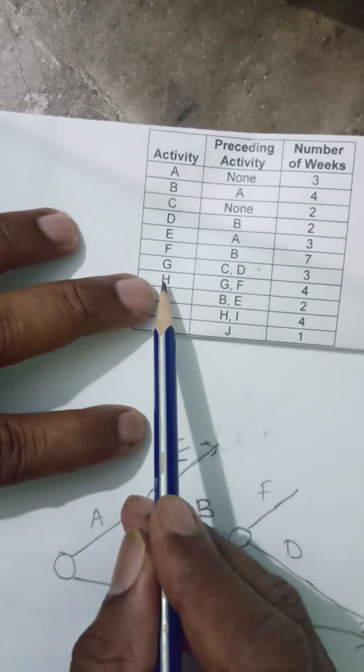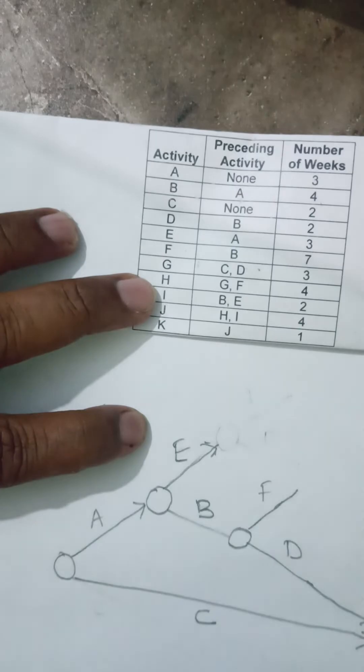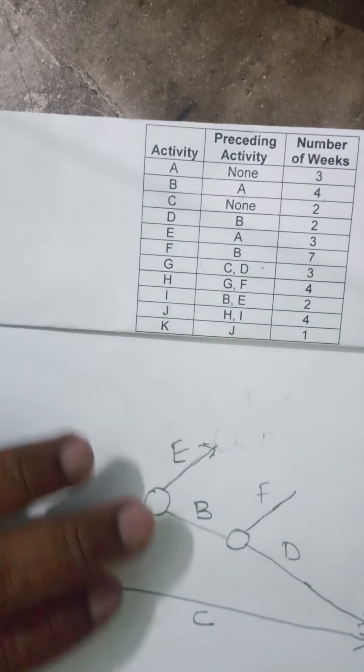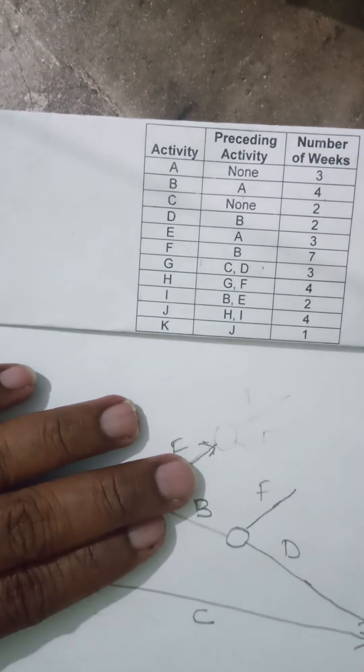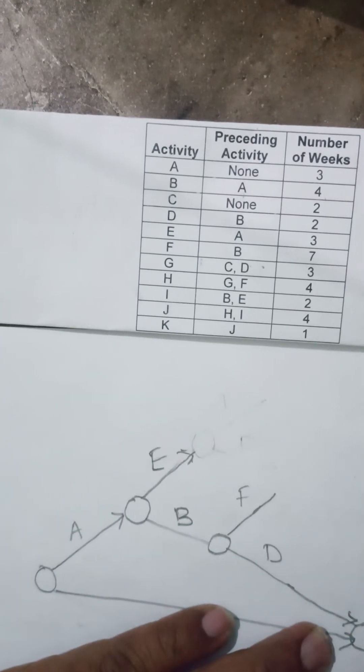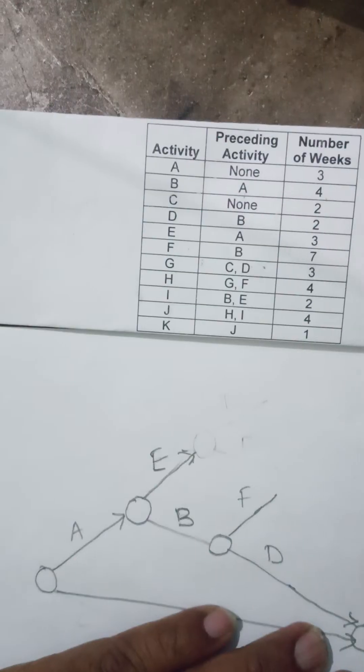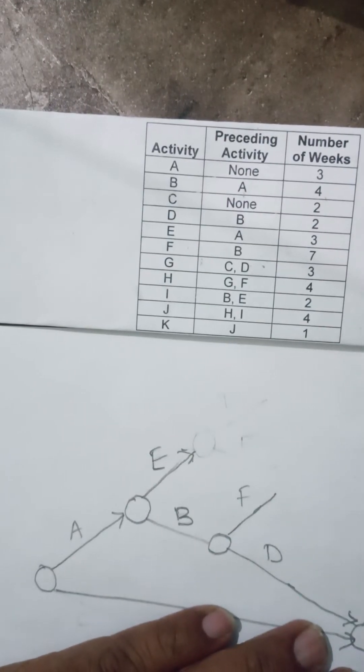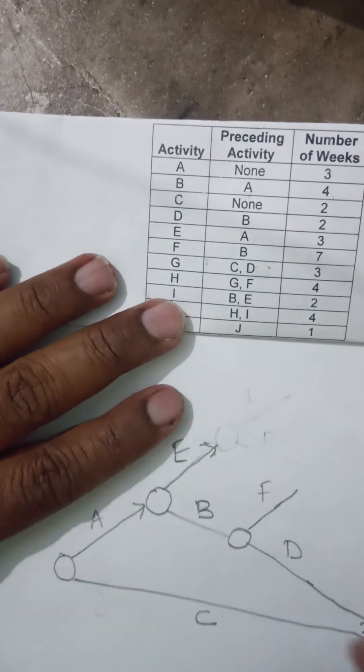H is starting from G and F. My G is here, F is here. And from there H is starting. Let me take my G a little bit up, somewhere here. And from there this F I can connect.